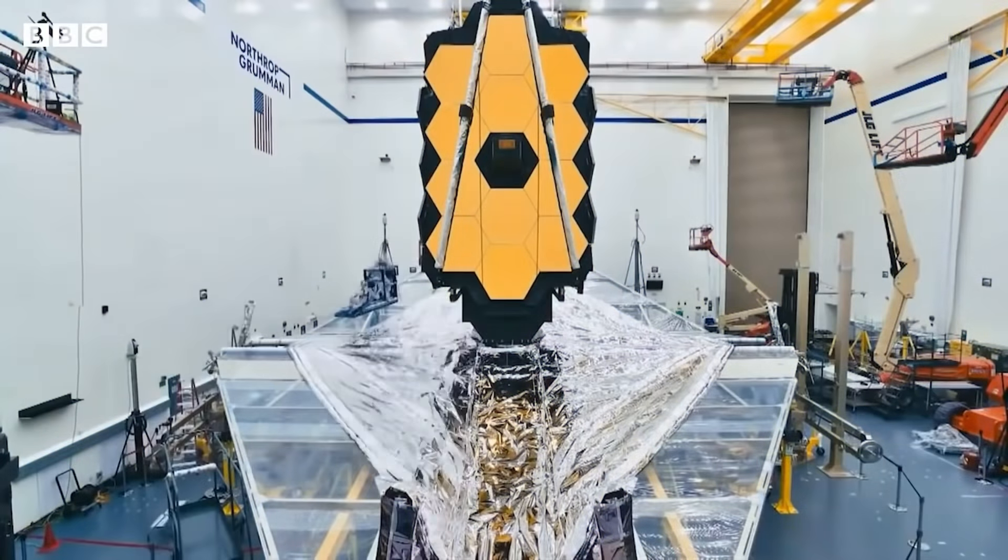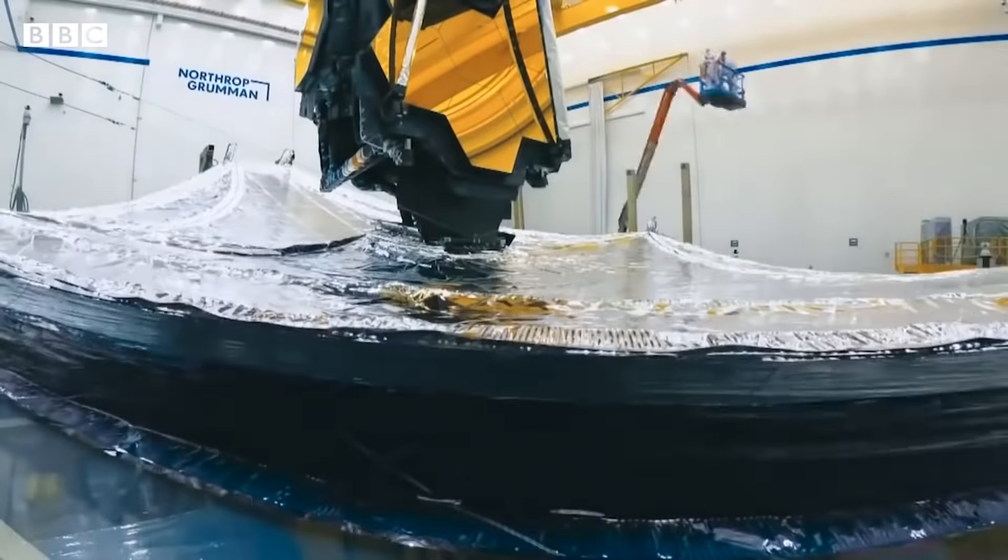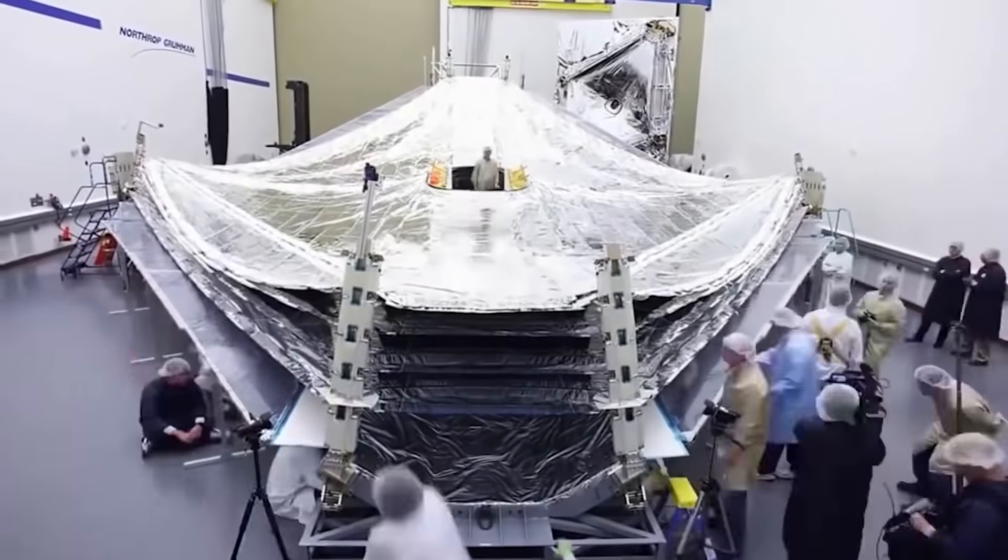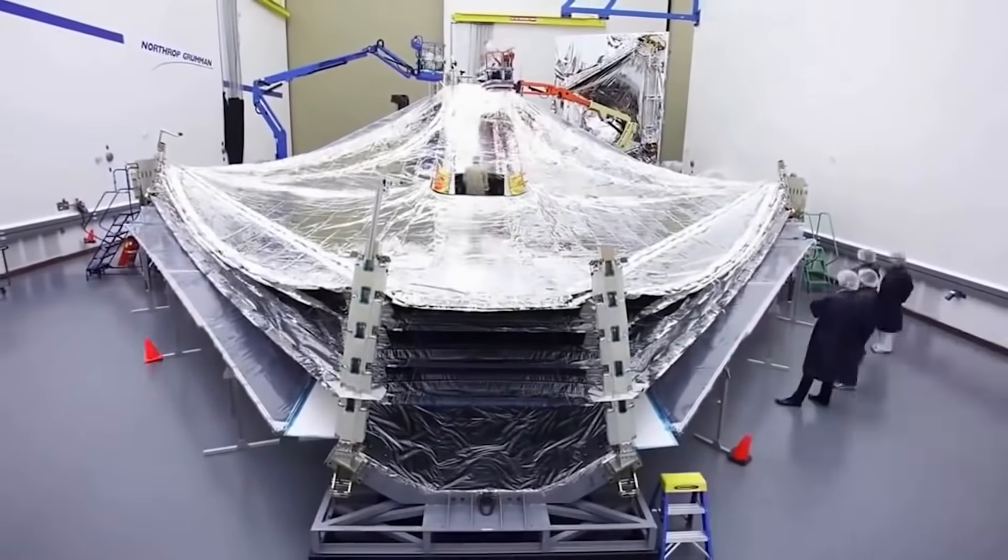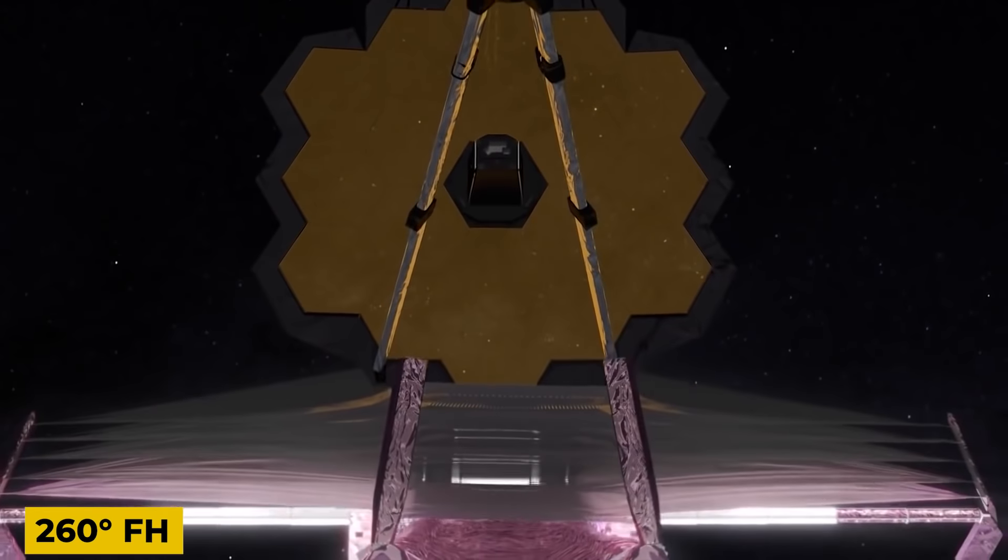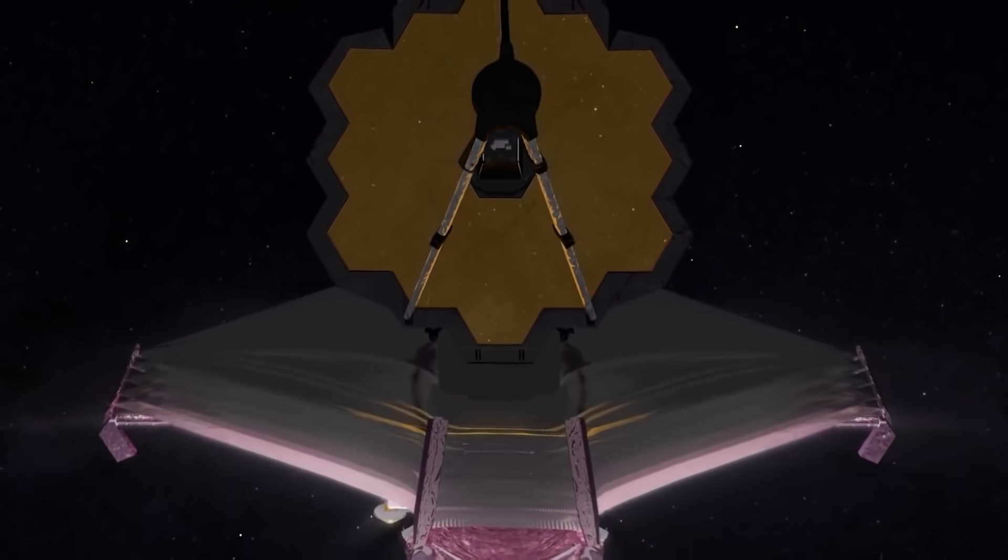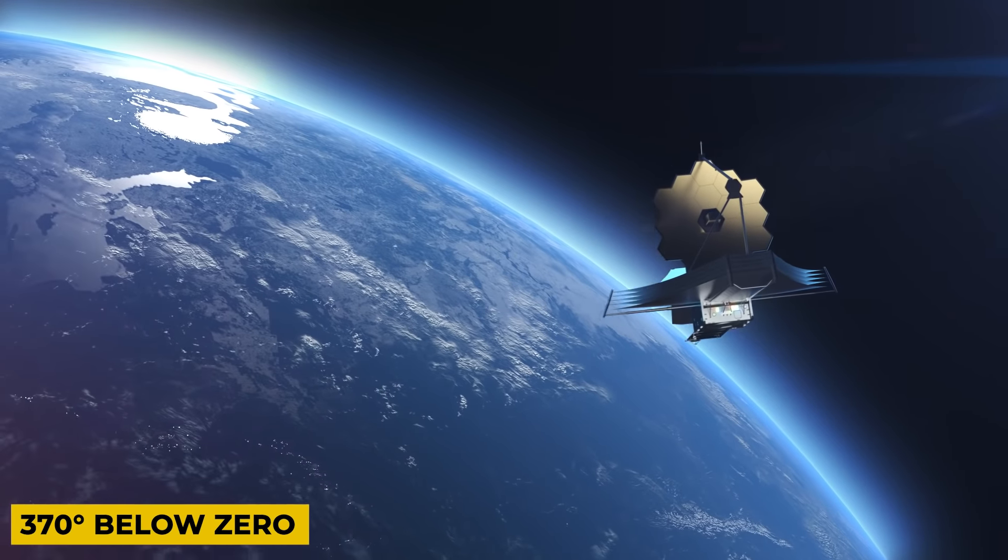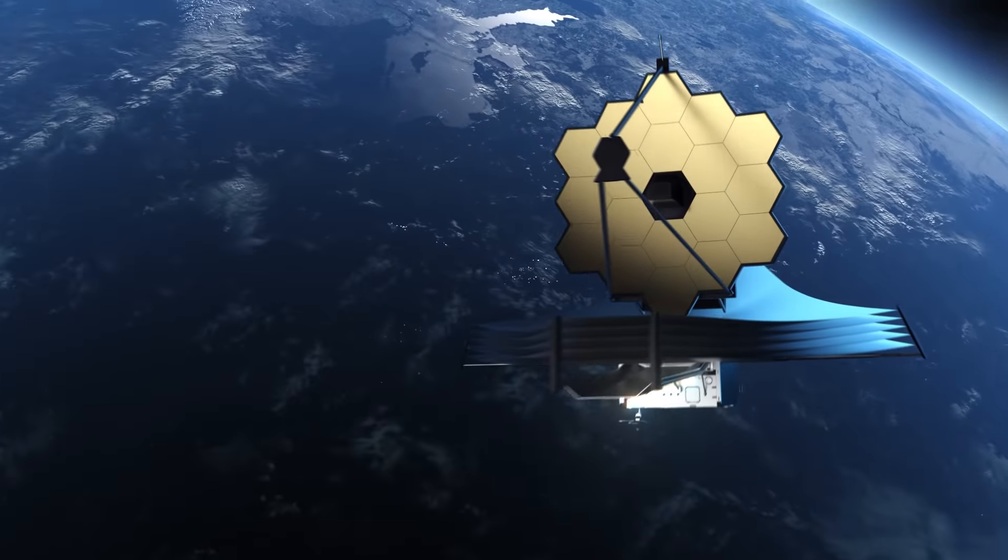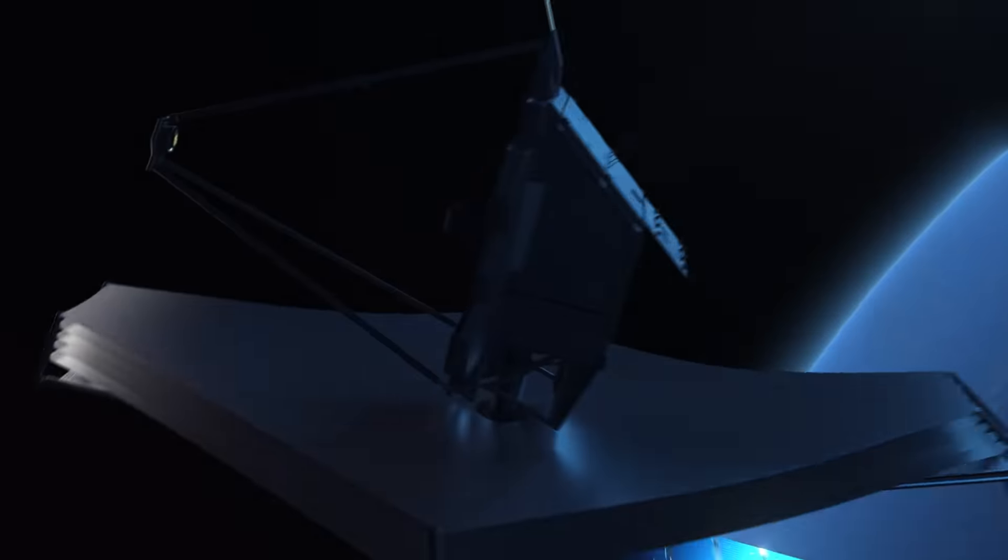A shield would have been necessary to protect the telescope from the immense heat generated by the sun. The side that faces the sun will be approximately 260 degrees Fahrenheit, while the other side will be around 370 degrees below zero, representing a nearly 600 degree difference in temperature.